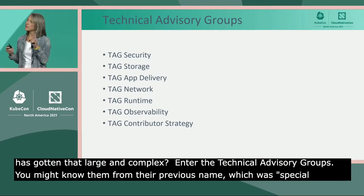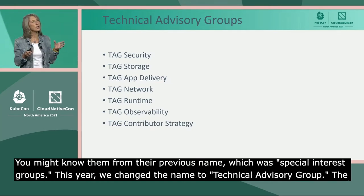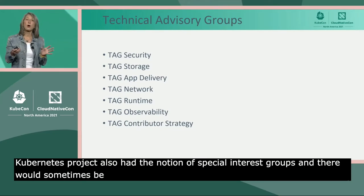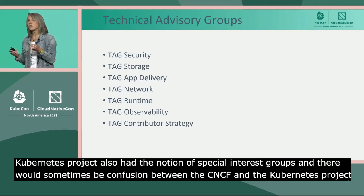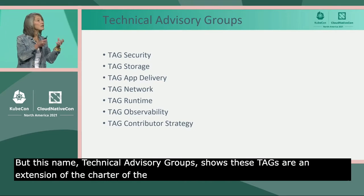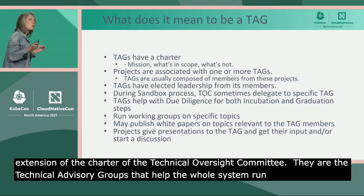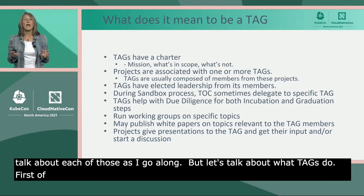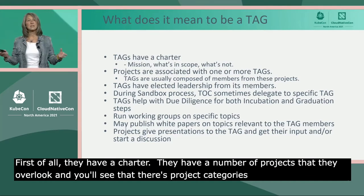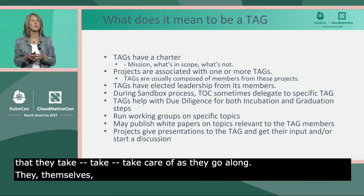The landscape doesn't look like that anymore, so how can we scale that governance process when it's gotten so large and complex? Enter the Technical Advisory Groups — you might know them from their previous name, Special Interest Groups. This year we changed the name to Technical Advisory Group for two reasons: one pragmatic reason is that the Kubernetes project also had Special Interest Groups and there was sometimes confusion between the two. But this name really shows that TAGs are an extension of the charter of the Technical Oversight Committee — they are the technical advisory groups that help the whole system run.